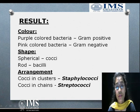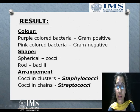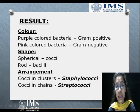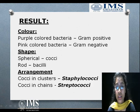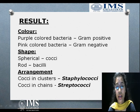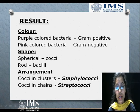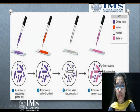We can also differentiate bacteria on the basis of shape. If the shape is spherical, that is cocci bacteria. If the shape is rod-shaped, that is bacilli shape. If the cocci shapes are present in clusters, then it is staphylococci bacteria. If that arrangement is in a chain, that is streptococci bacteria.